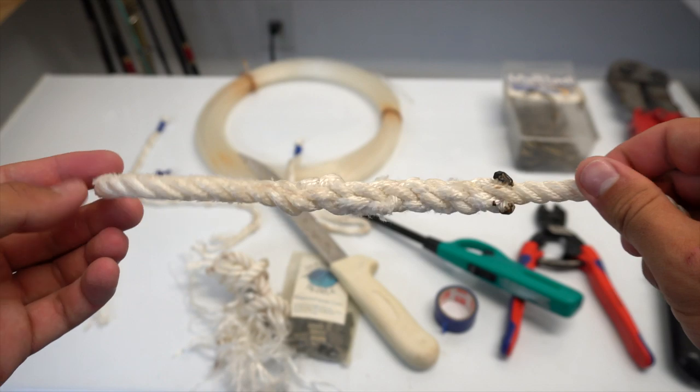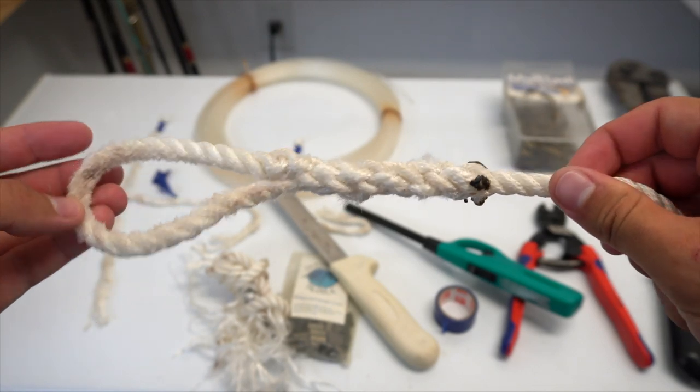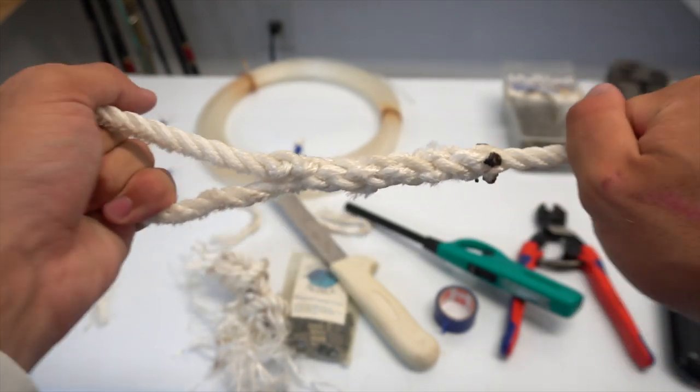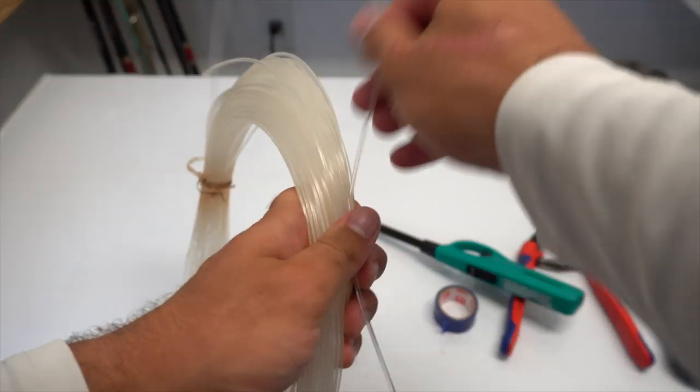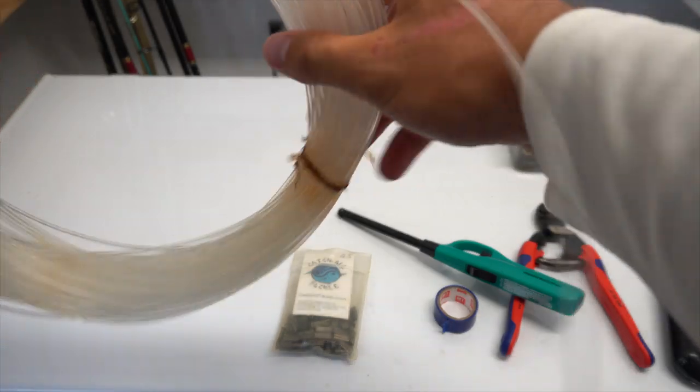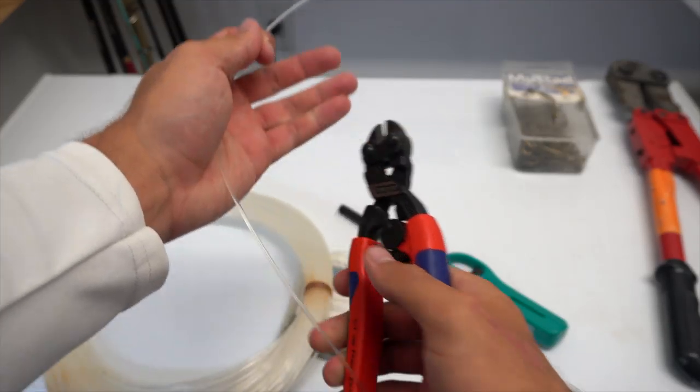Once you've done all that, you've spliced your rope and you have a solid loop connection that you're ready to tie some mono to. The first thing you want to do is you want to take about a 10 foot section of your mono and cut it just so you have it ready to go.